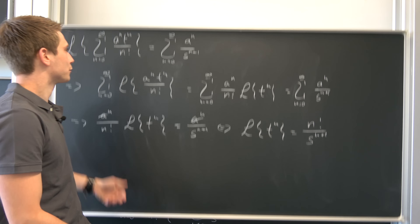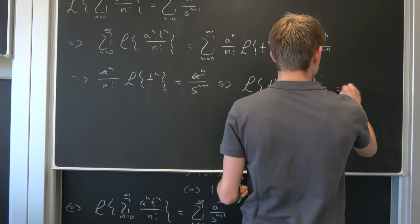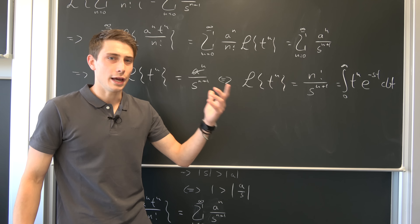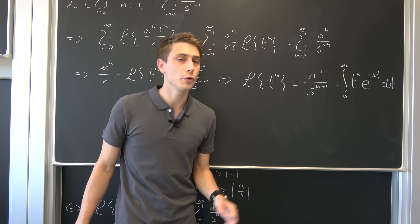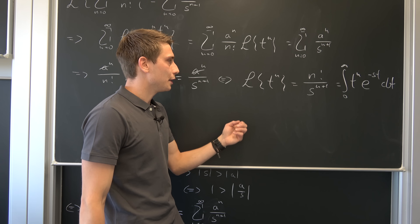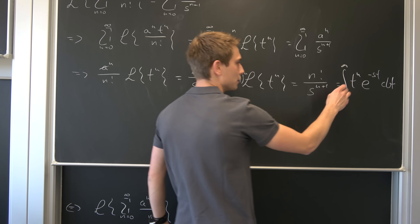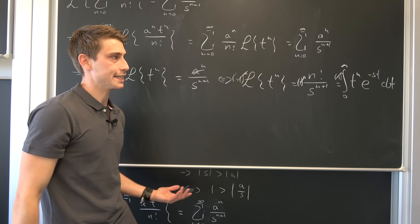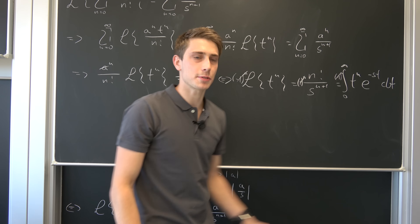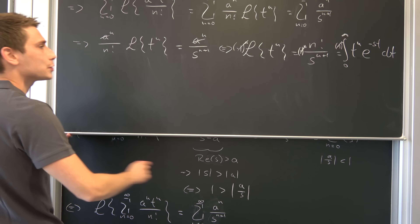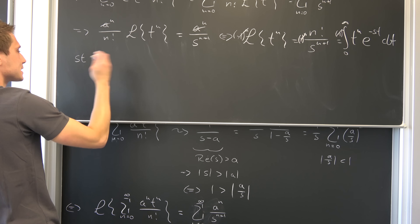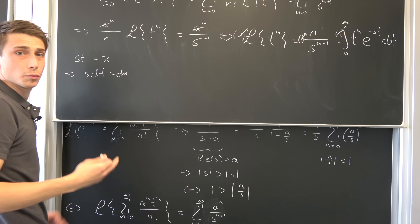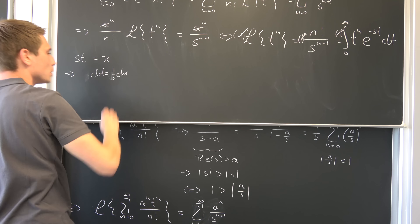Don't forget what this actually is — the Laplace transform of t to the nth power is the integral from 0 to infinity of t to the nth power times e to the minus st dt. And if you're wondering what happened to the negative 1 to the nth power, it appears on both sides so it cancels out. Now I'd like to introduce a substitution: let s times t equal x, so s dt equals dx, meaning dt equals 1 over s times dx.